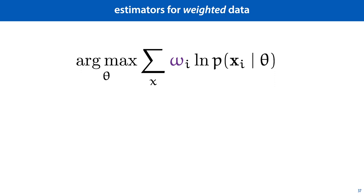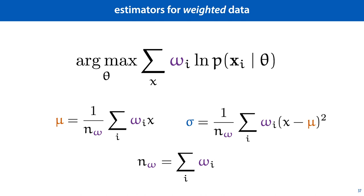We minimize the log-likelihood as before. We assign each term, that is, each instance, a positive weight, and we maximize the weighted sum. For normal distributions, the weighted maximum likelihood estimators are exactly what you'd expect. The same as for the unweighted case, except that the sum becomes a weighted sum, and instead of dividing by the total number of instances n, we divide by the sum of all the weights n omega.